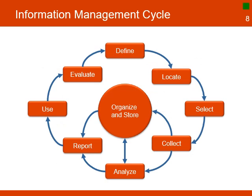One element important to understand when planning for an MIS is the information management cycle, which consists of nine steps. The initial three steps — defining the data, locating the data, and selecting the data — are the foundations, ensuring data meets project needs, is easy to access, and is of good quality. The next three steps focus on collecting the data, organizing and storing the data, and analysis of the data. The last three steps include reporting information, stakeholders using the information to make decisions, and an evaluation of the cycle to continuously improve it.